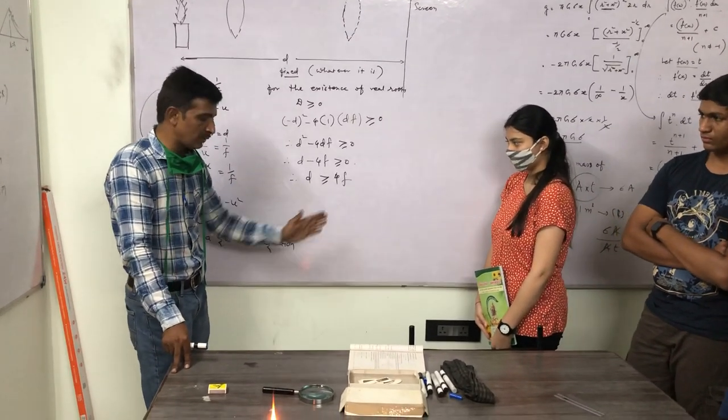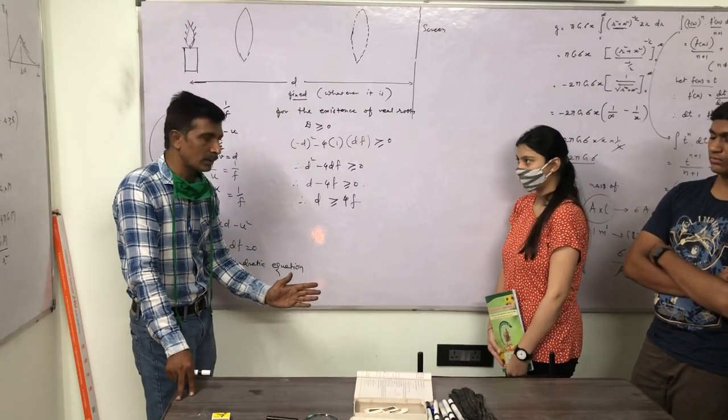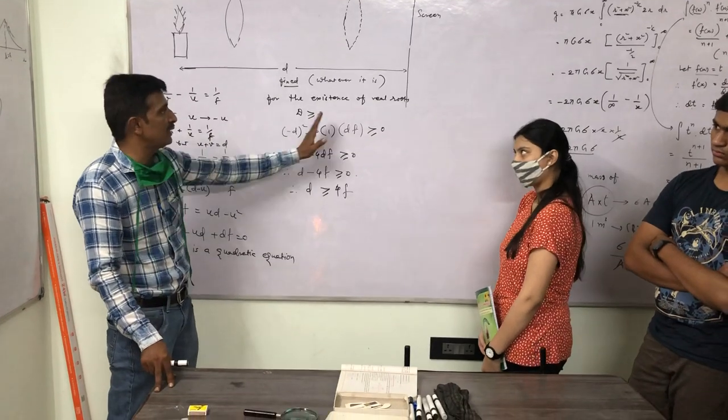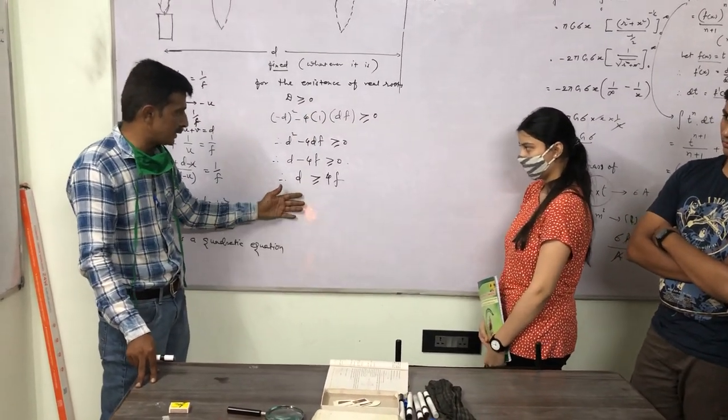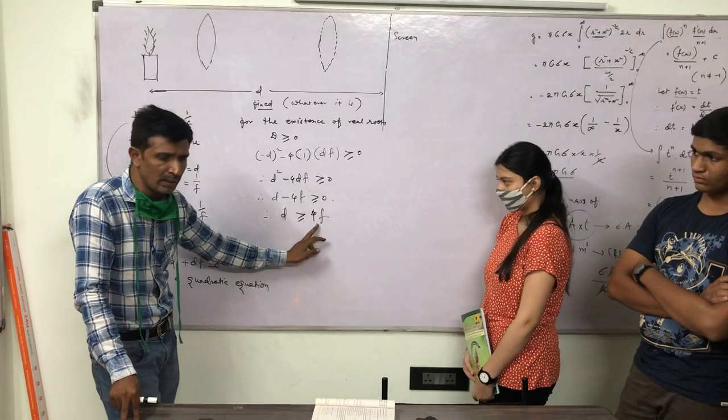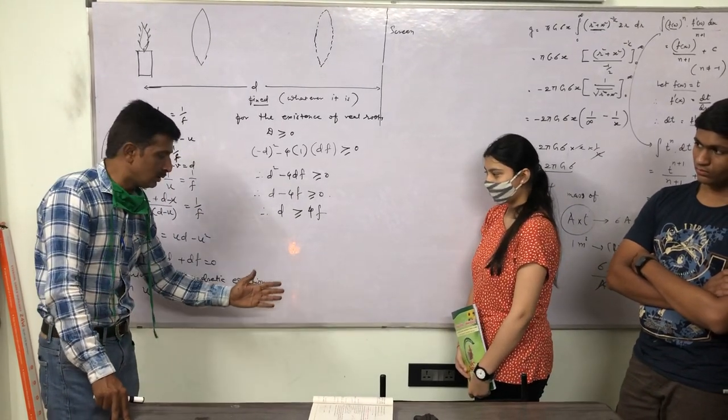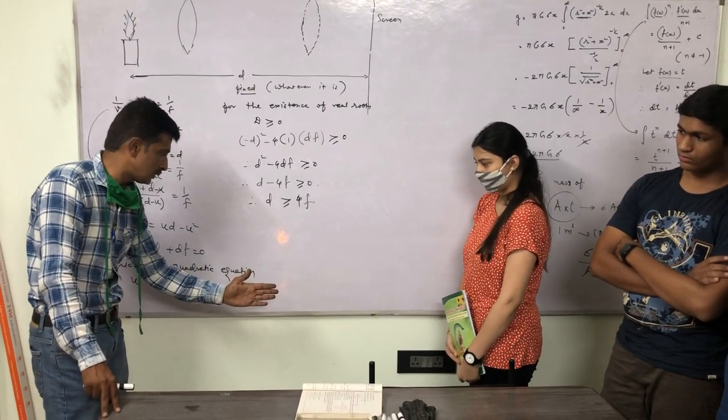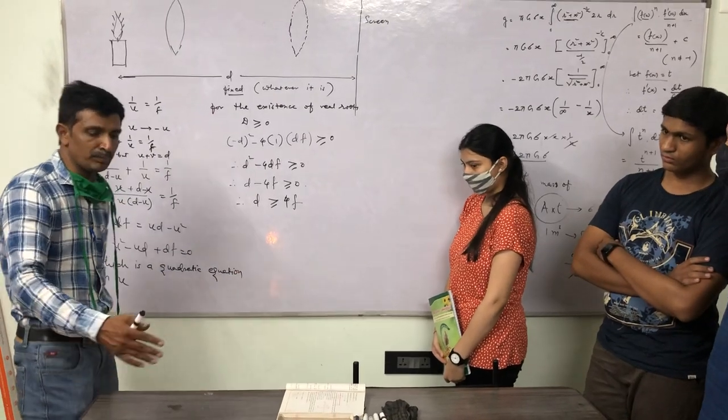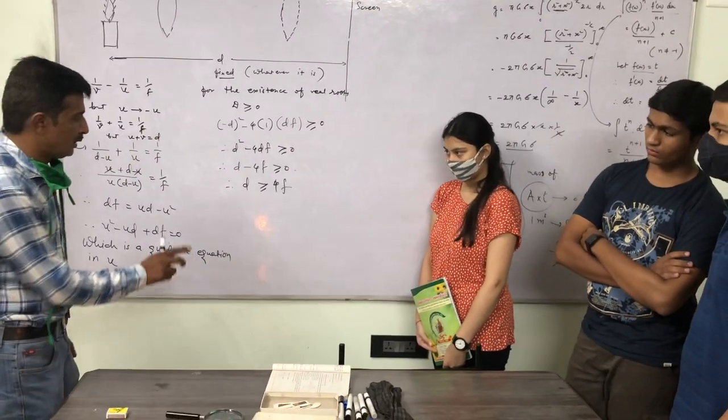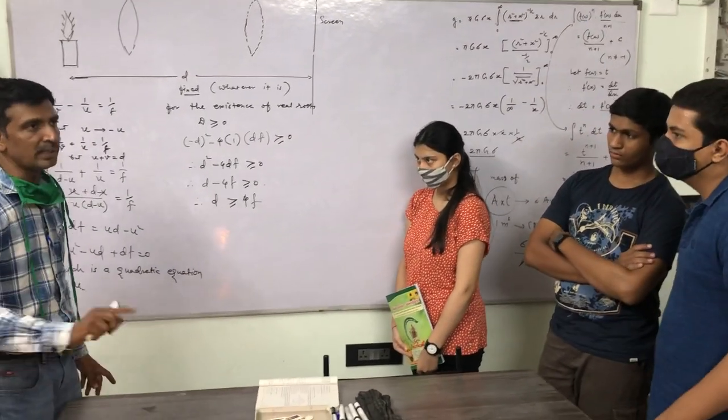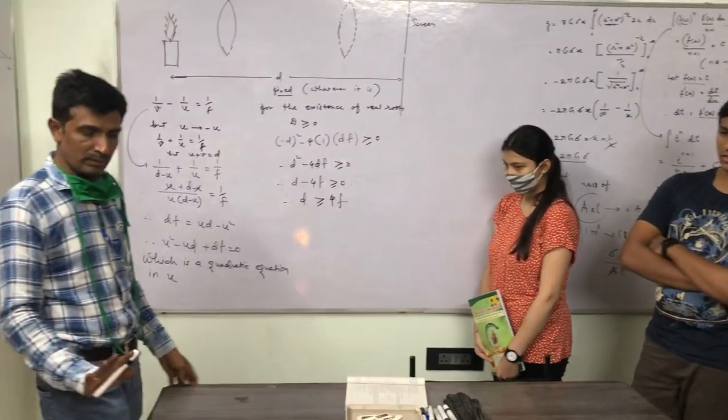If D = 4F, we have only one position, the middle one. If D < 4F, we cannot have any real image on the screen. And if D > 4F, then we have two positions. This time, a smaller image when the lens position is here, and a bigger image when the lens position is here. Object distance and image distance are interchanged. Concept clear.